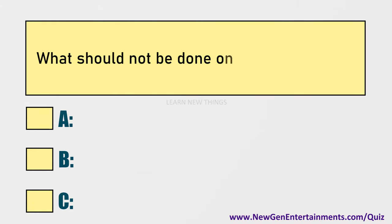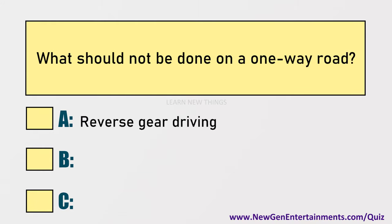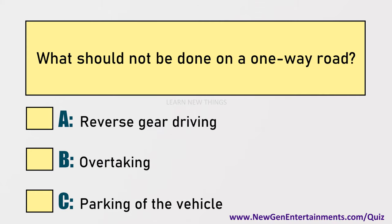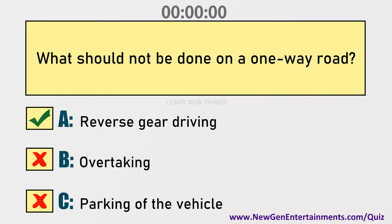What should not be done on a one-way road? Options are: A) Reverse gear driving, B) Overtaking, C) Parking of the vehicle. Answer: Option A, Reverse gear driving.